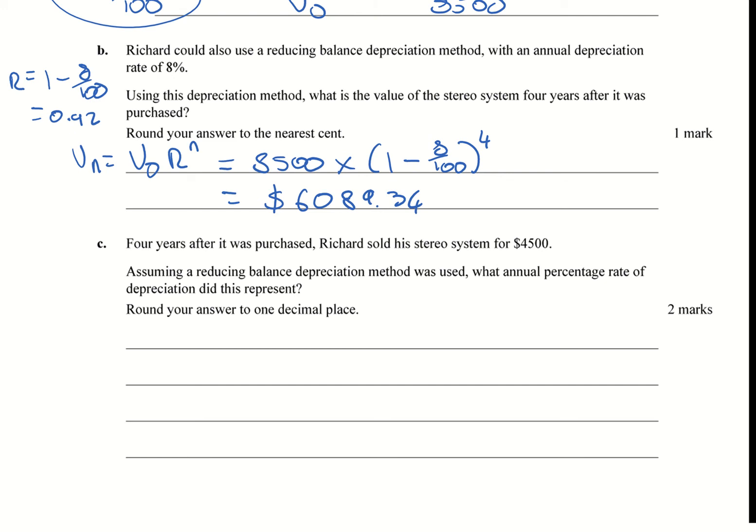Now Question C: four years after his purchase he sold his stereo system for four and a half grand. So remember this would be your Vn. Assuming a reducing balance depreciation method was used, what annual percentage rate of depreciation did this represent? So remember in this case you're going to have again, similar to what we had before, Vn equals V0 times R to the power of n.